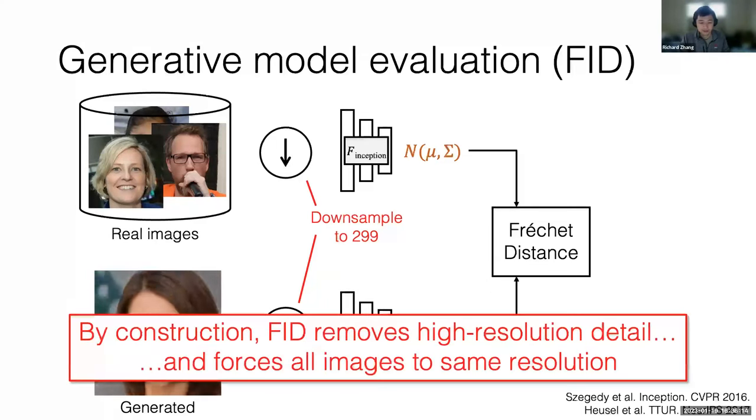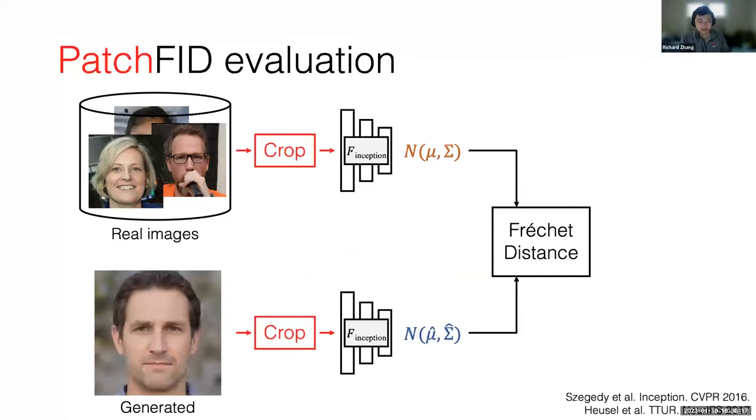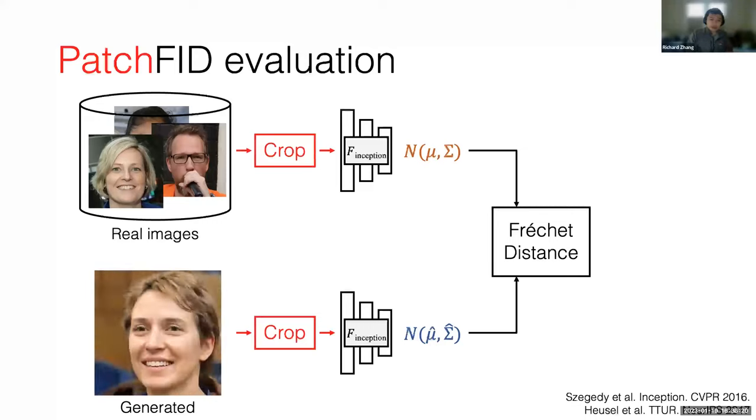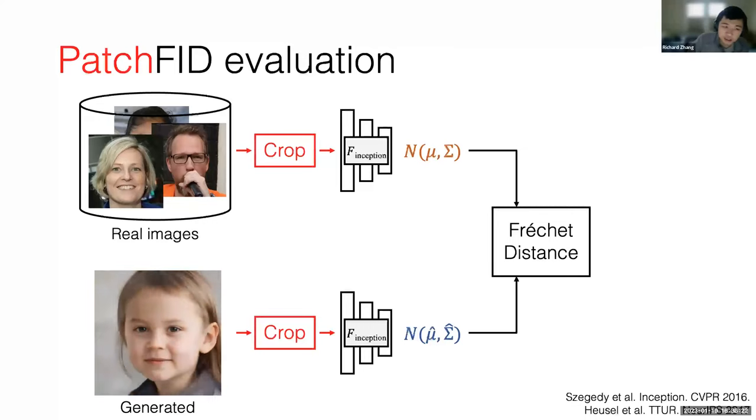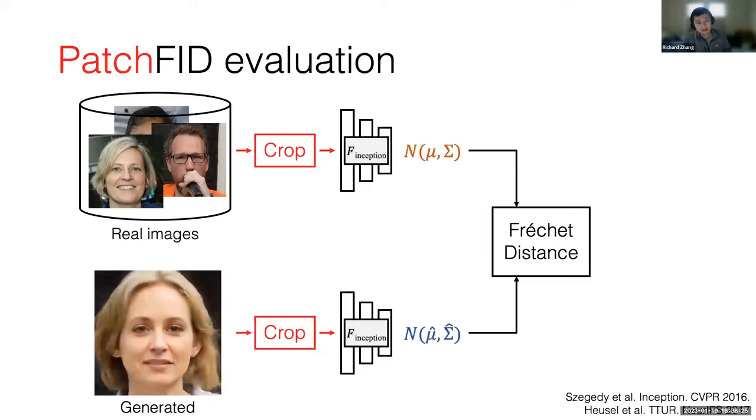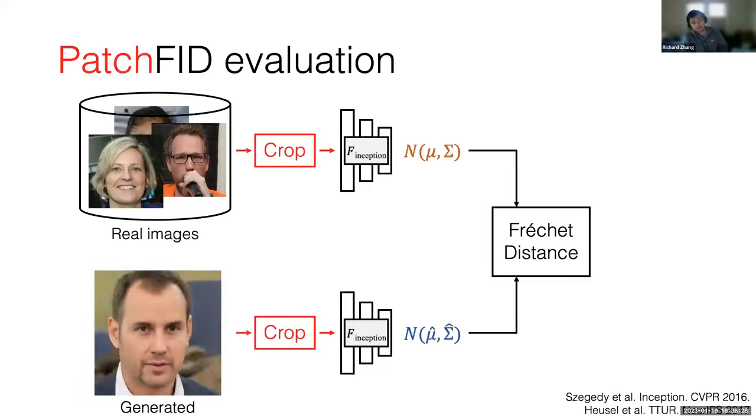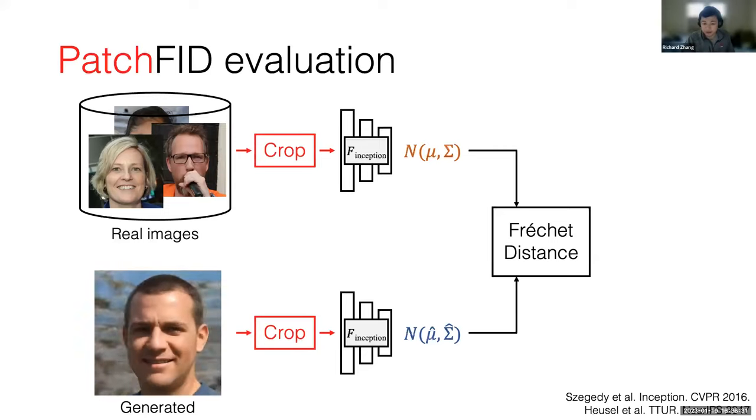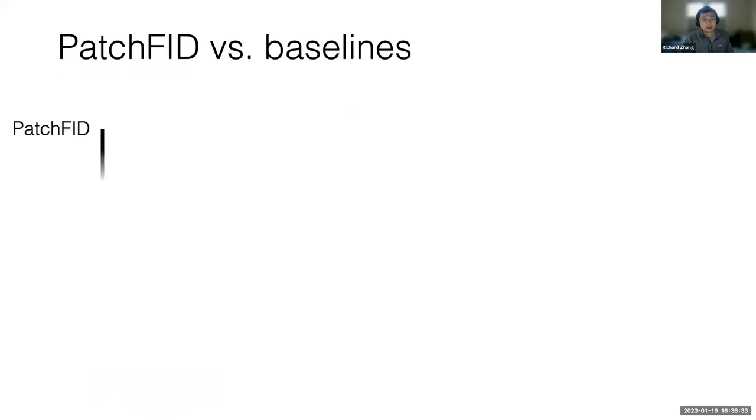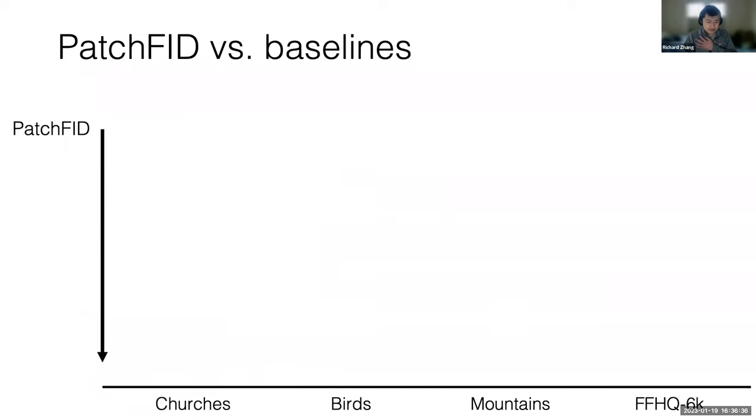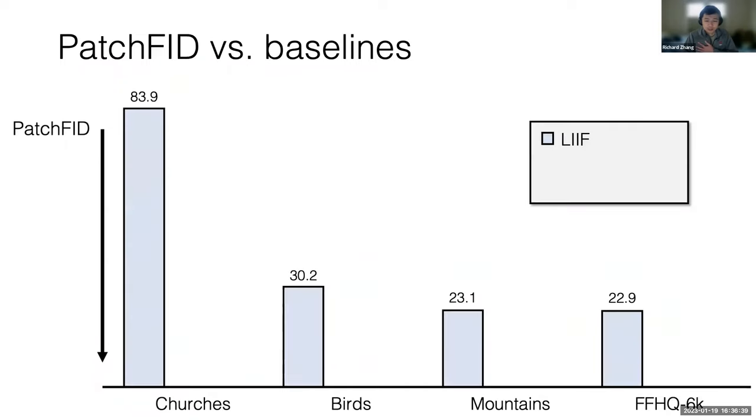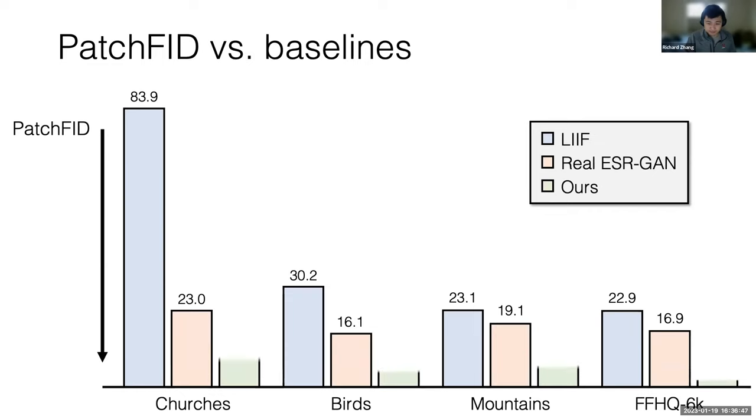What we do is instead, remove that downsampling step and just say, we'll take 299 by 299 crops. That's what we call patch FID. We found this is a much more fair evaluation metric when you're trying to evaluate high frequency textures. We can evaluate patch FID versus some baselines. Lower is better. Here's the baseline LIF and REALESRGAN. These are super resolution methods. They get these values across these different datasets. Our method gets something that's much lower.